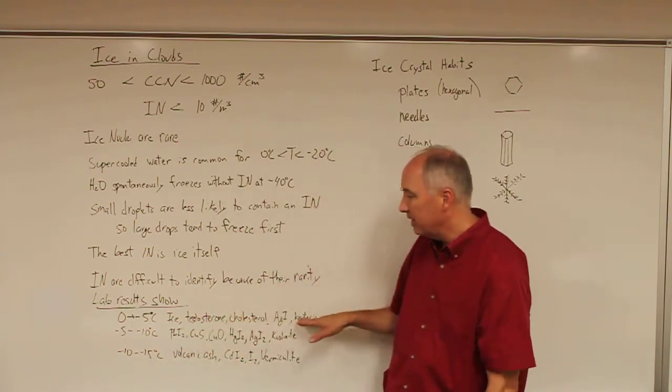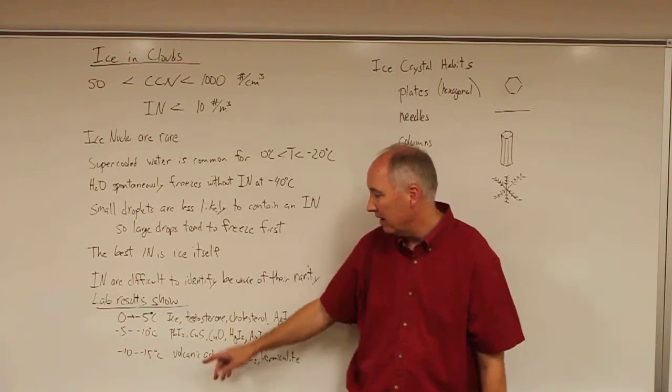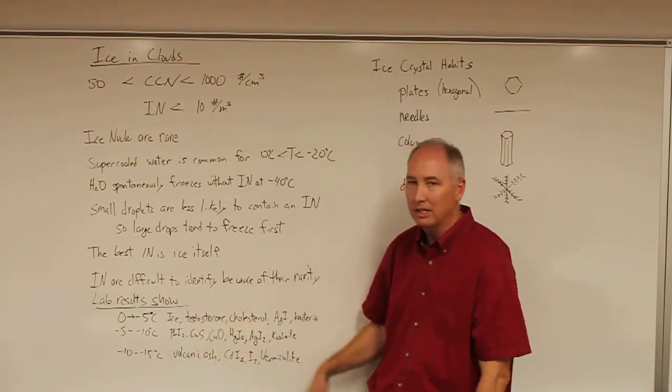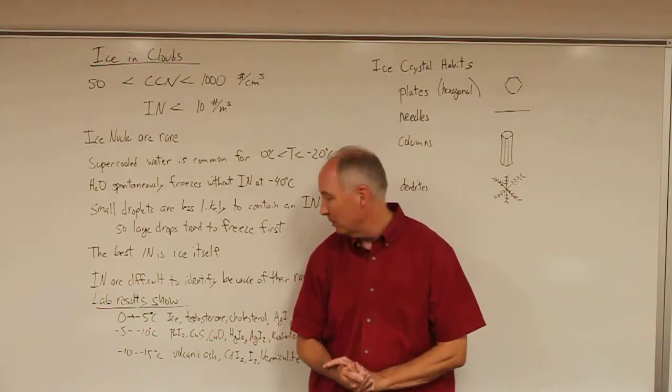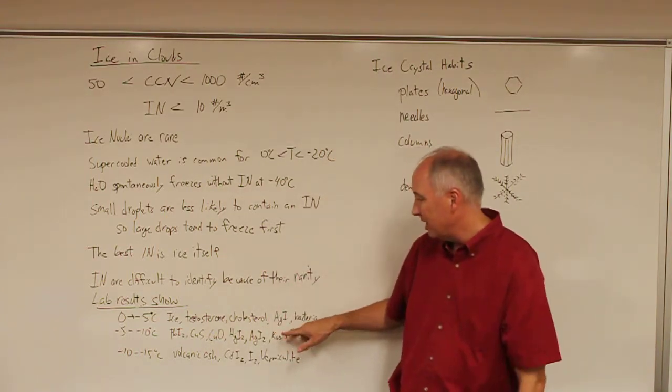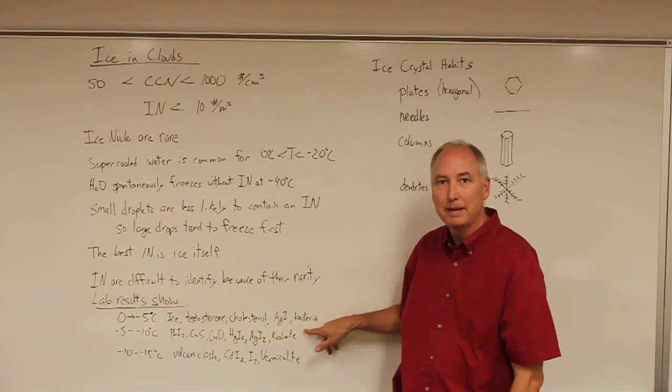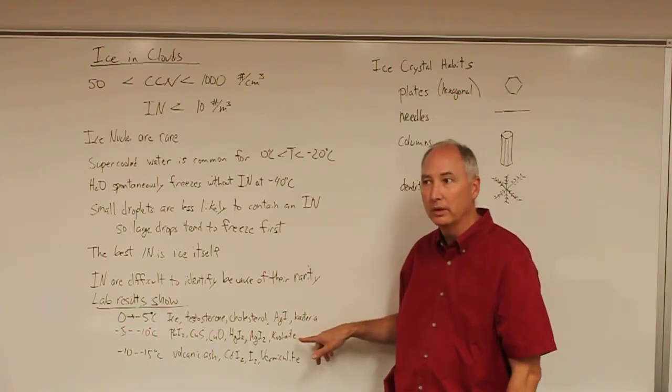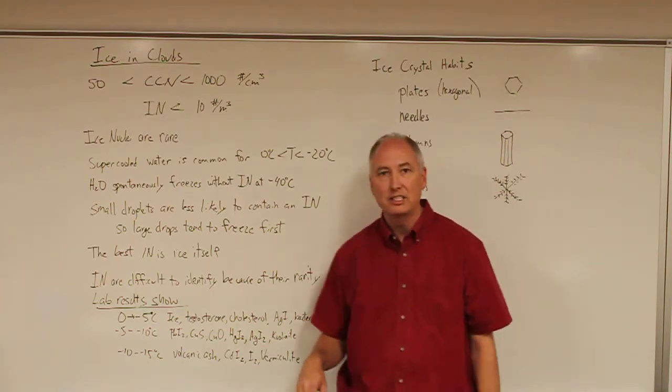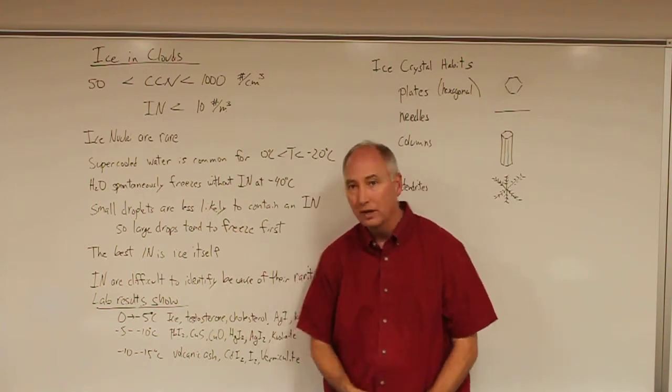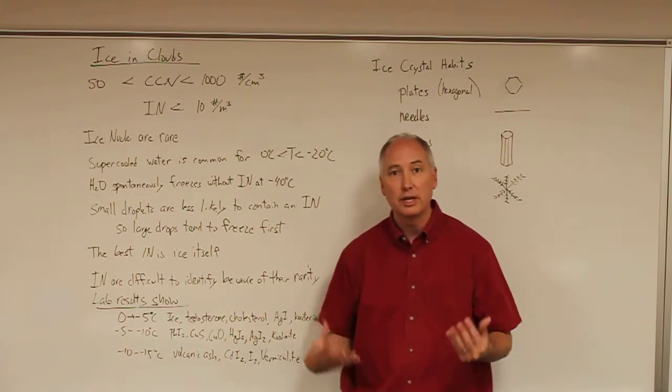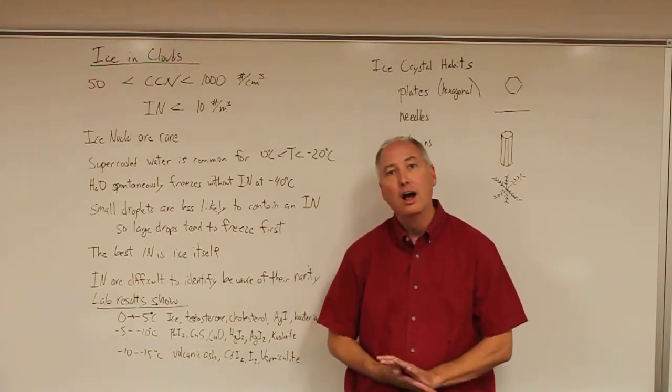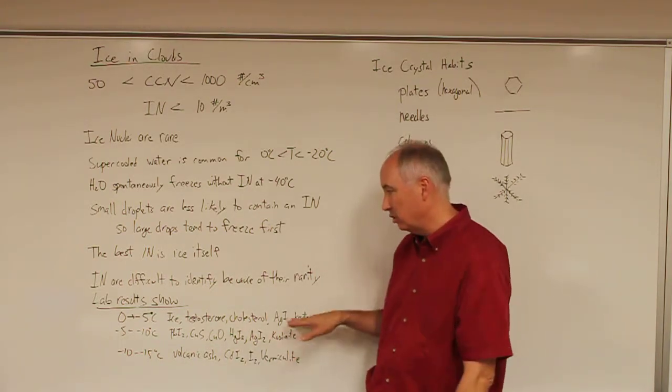If you look at the list of really good ice nuclei, you have ice itself, testosterone and cholesterol—hopefully there's not too much of that in the atmosphere except maybe near a football game. We also have AgI. Some bacteria have been shown in the laboratory to nucleate ice at temperatures as warm as -2°C. But you can imagine it's exceptionally difficult to figure out which bacteria are actually in the air and which ones might act as ice nuclei.